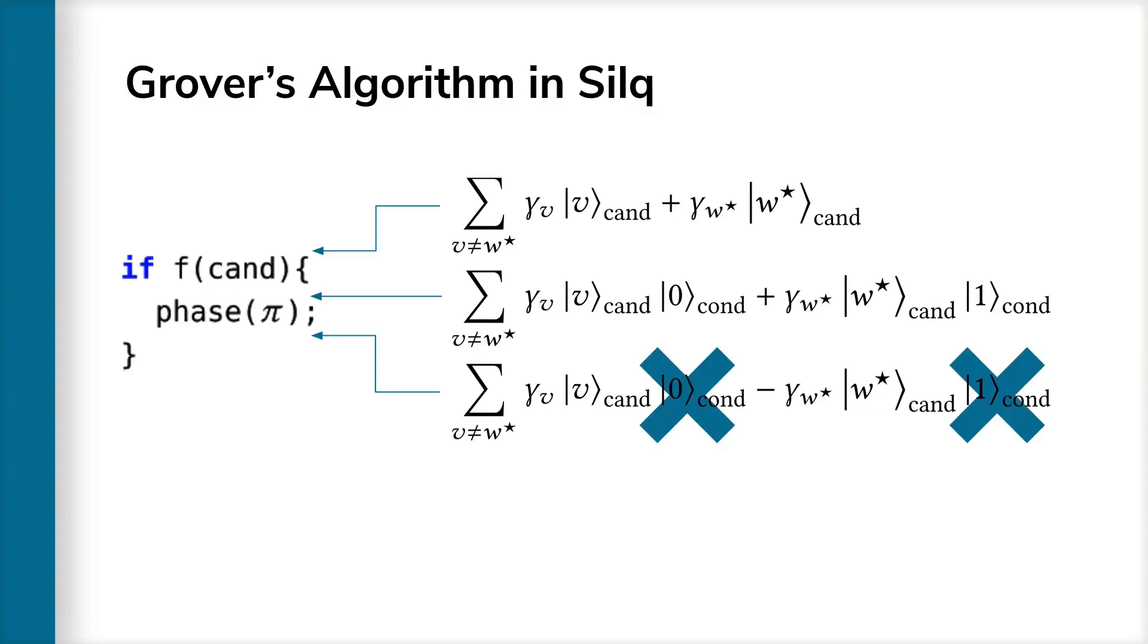Instead, a reasonable expectation is that the temporary value stored in cond just disappears, as shown here. Zilk offers precisely this semantics and uses its quantum type system to ensure this dropping semantics is physically realizable. Here, this is possible because cand is const and therefore still available for uncomputation, and f is q-free. This is sufficient to ensure that reversing the operations of f correctly uncomputes the condition, as we demonstrate in more detail in our publication.